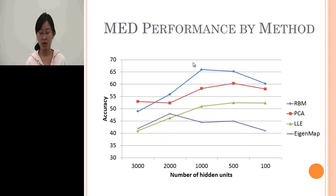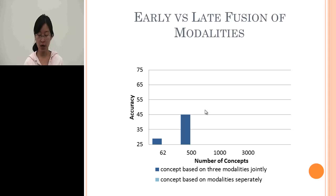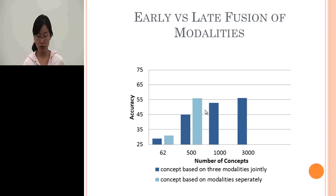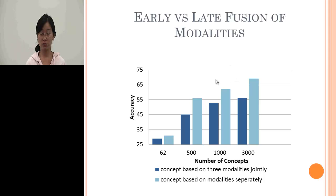We also compare deep belief nets with other manifold learning methods such as PCA and Isomap. Around 1,000 hidden units, DBN performs the best, with PCA as the next best. We also compare early fusion, learning data-driven concepts from audio, scene, and motion features combined at the start, versus late fusion, learning concepts from three modalities separately and then combining for event detection. Late fusion is much better than early fusion.